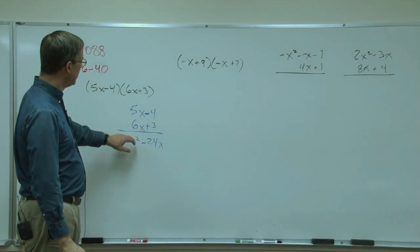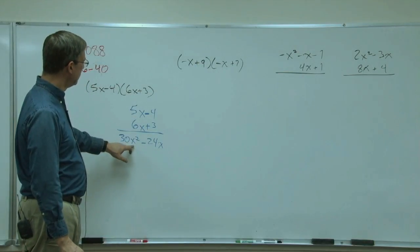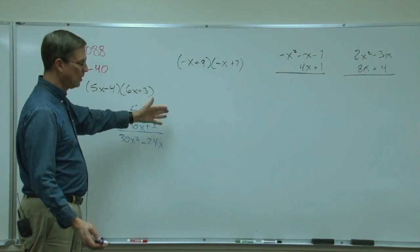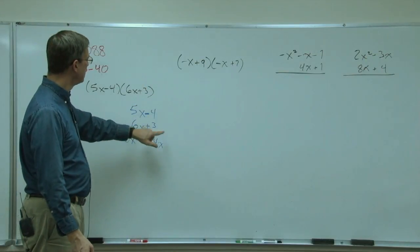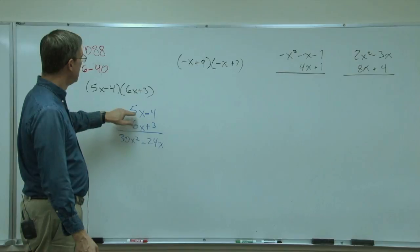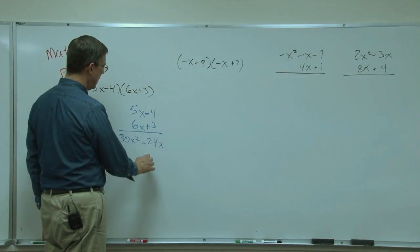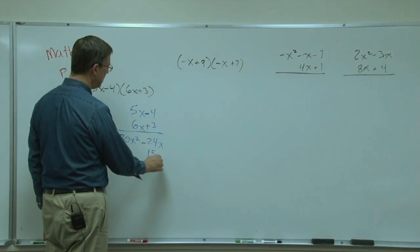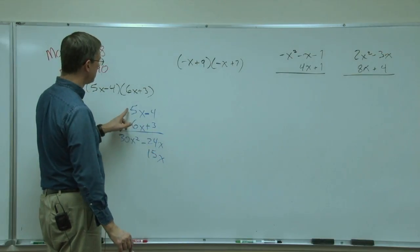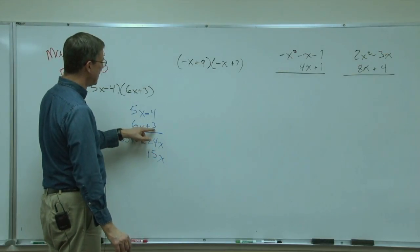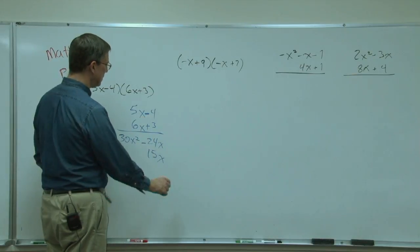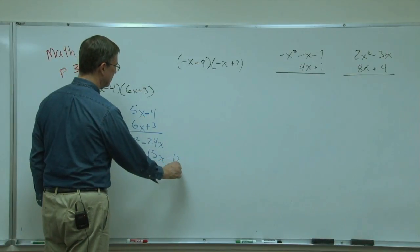So here it was x squared, because x times x is x squared. x just times 4, 24x. Now I'm going to take the positive 3 times the 5x, so we're going this way, and we get 15x, and that's going to be positive. They're both positive. Then 3 times negative 4 is negative 12.